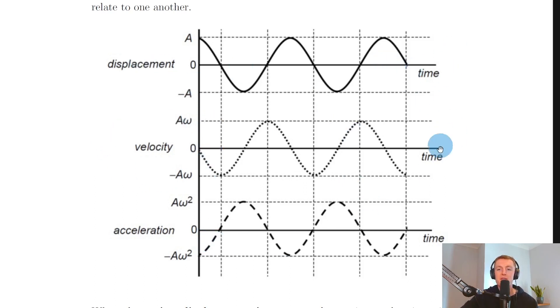So we've seen how to go from displacement to velocity to acceleration just by differentiating once to get from displacement to velocity, and differentiating again to get from velocity to acceleration. That's all for this video — thanks for watching. Make sure to give the video a thumbs up, subscribe to the channel, and I'll see you in the next one. Take care.